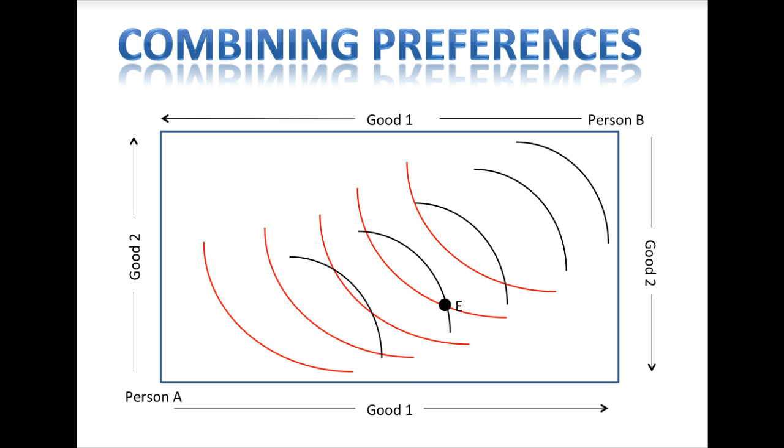When we combine Person A's preferences and Person B's preferences in the box, we can start to determine what potential trades might take place. The thing to keep in mind is that a trade will only happen if it will make both people better off. If the starting point is point E, then all the points in the lens between Person A's and Person B's indifference curves will make both of them better off. Thus, if these people are going to trade, they are going to end up at some point within this shaded region.